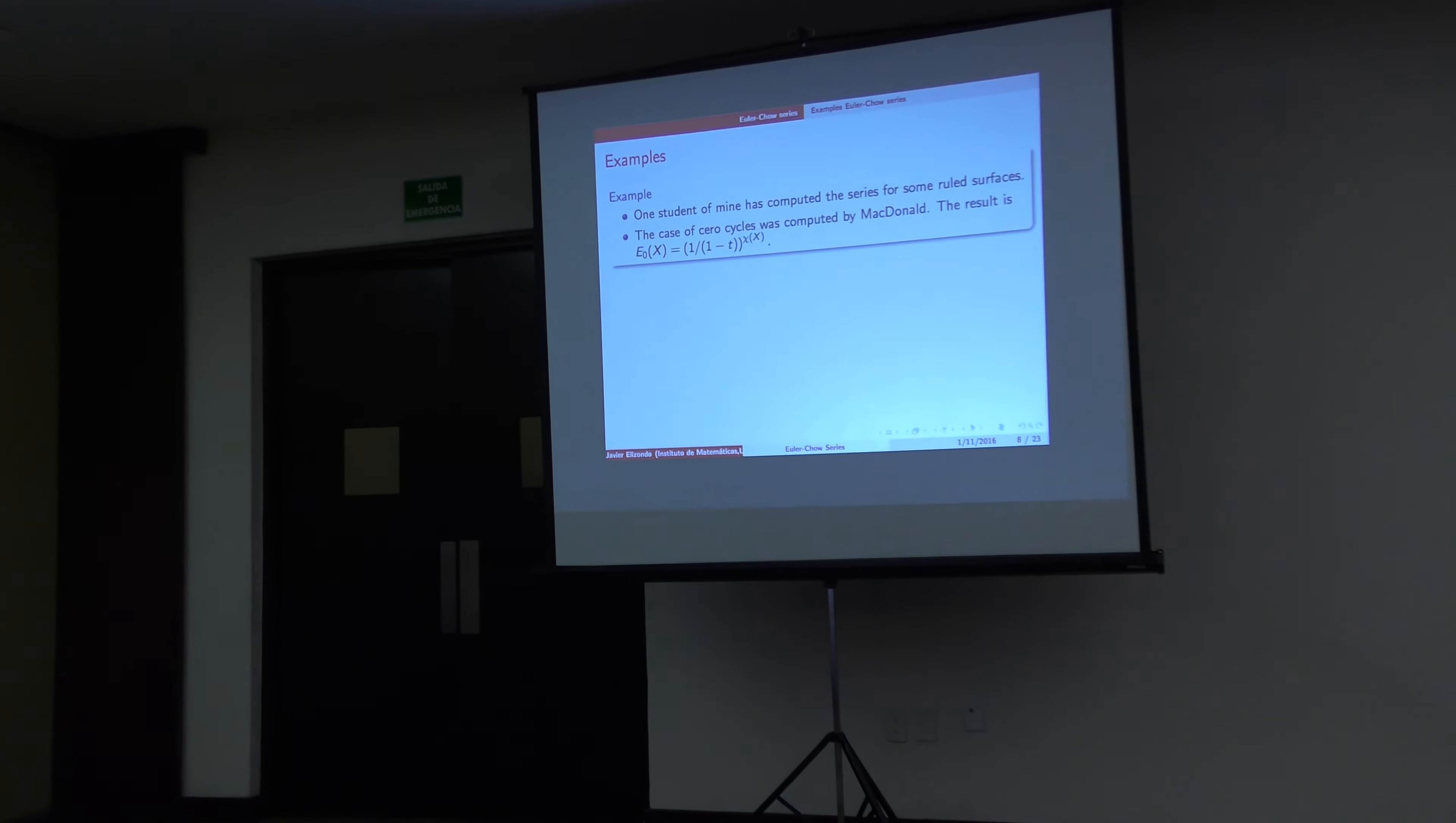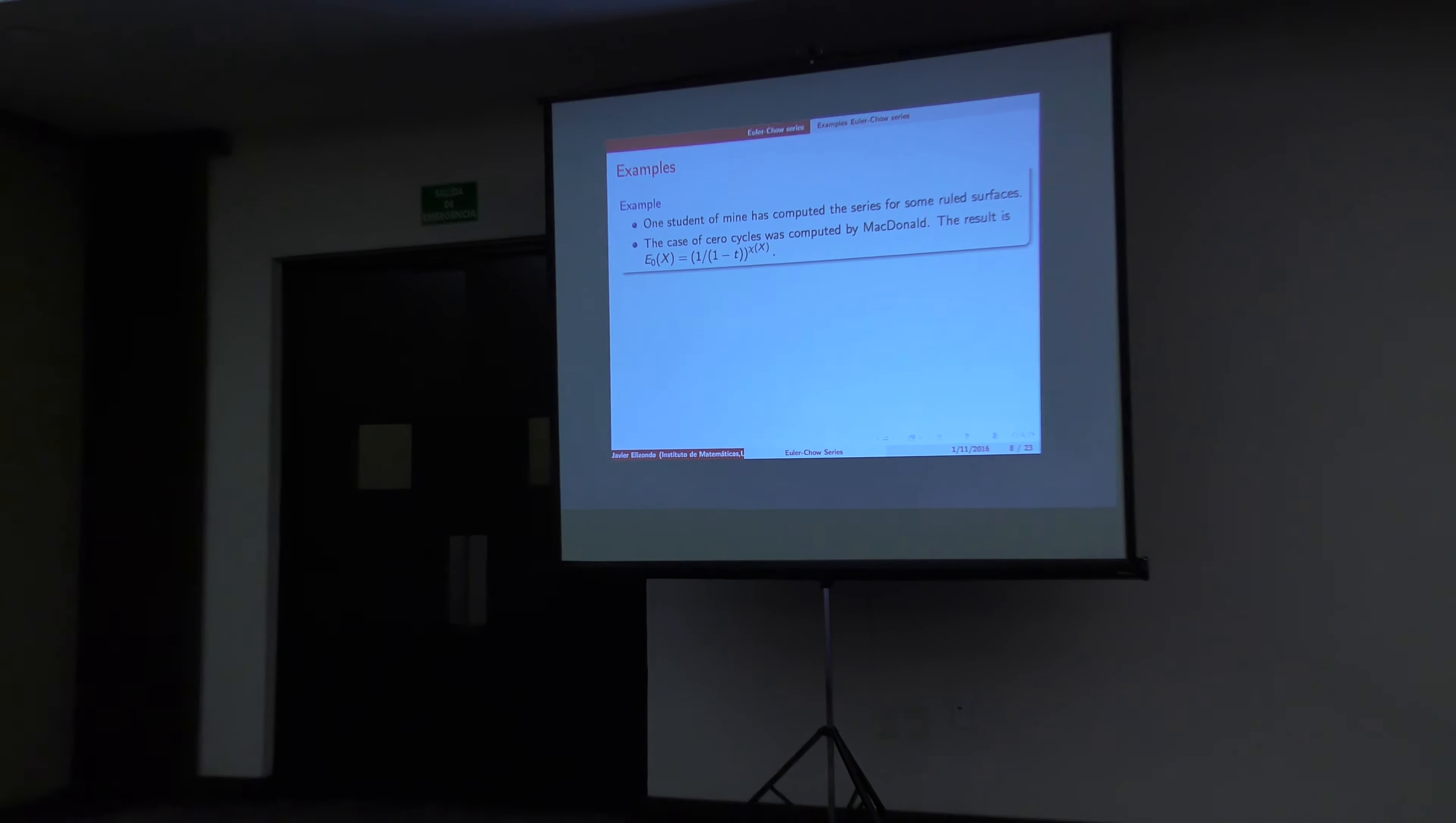So, you have big things. So, the series for codimension one, when you have the Picard of the variety equal to the integers, it's just the Hilbert series. Or you have all generalized Hilbert series. This is the first example that we don't have that. I mean, big numbers can be one, big. The case of zero cycles was computed by Yau, long time ago. And without this one.